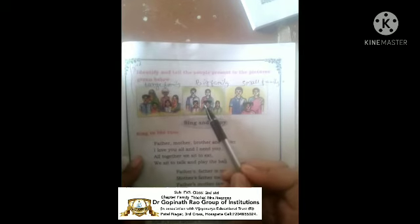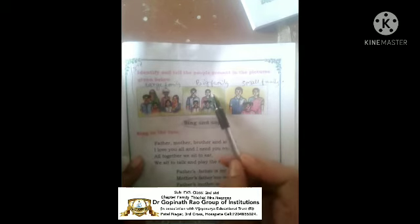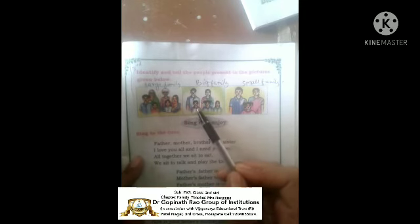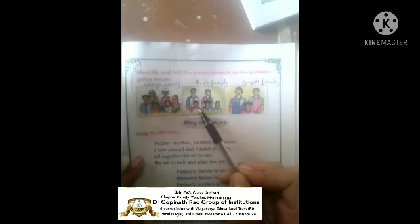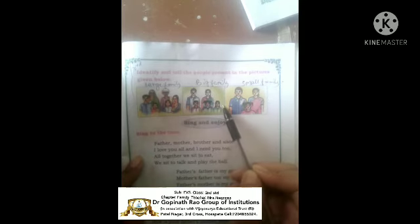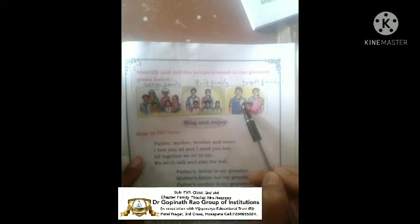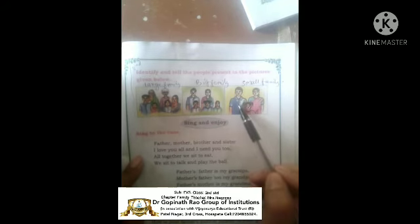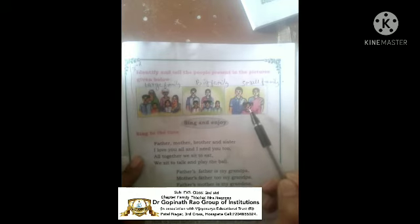In the second picture: mother, father and two or more children — that is called a big family. Three children is called a big family. And the last picture: father, mother and one child — that is called a small family. These are the types of the family.